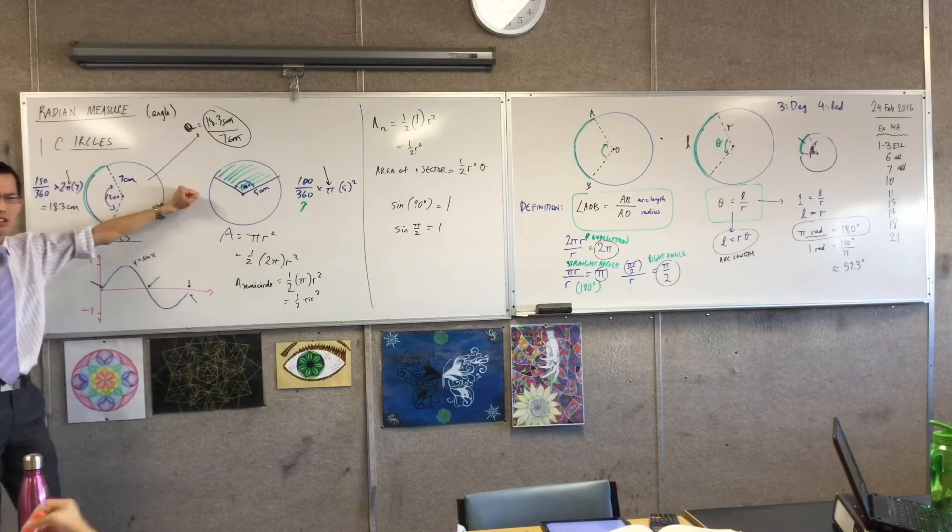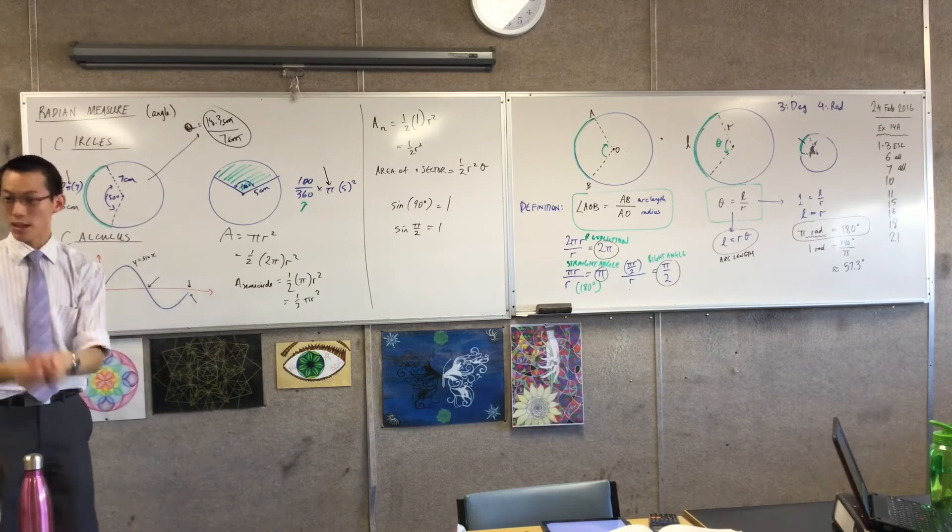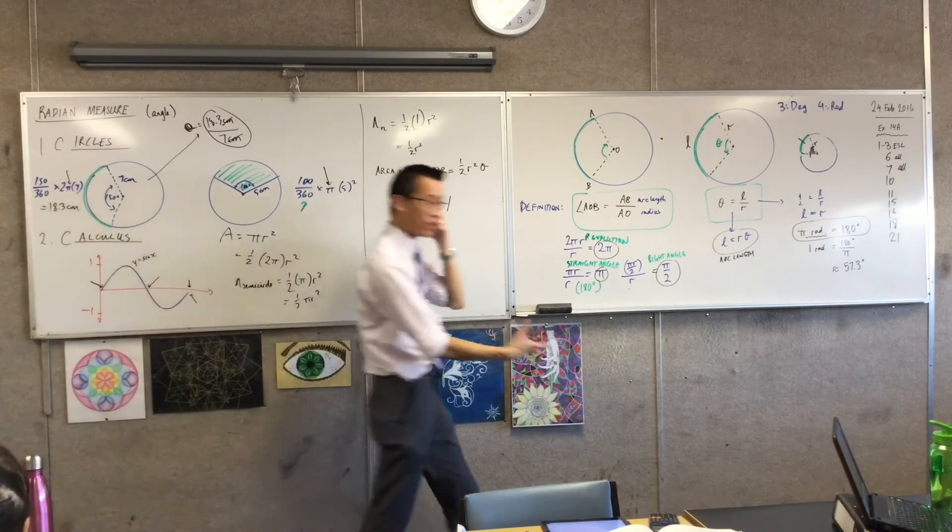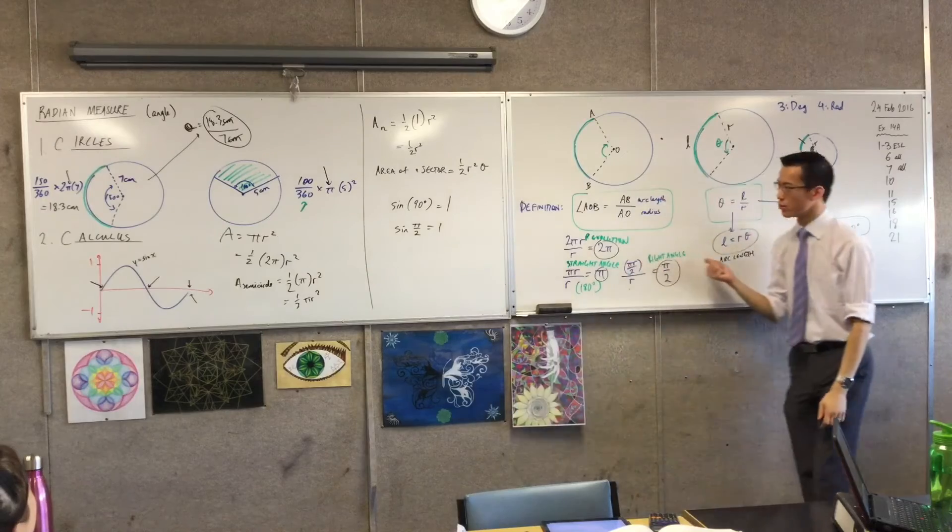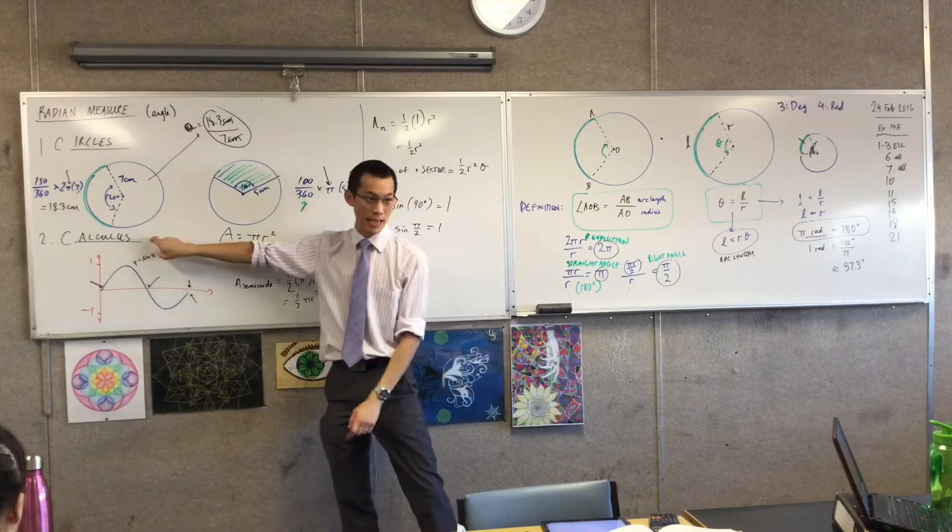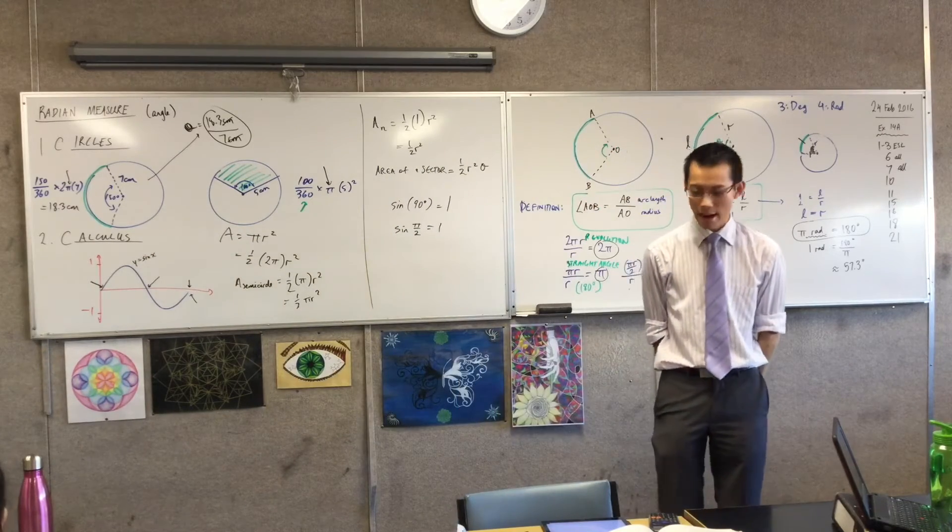So if you're in degrees, don't change it. Don't change the question into radians so that your calculator can deal with it. Just deal with the question in degrees and change your calculator. By the same token, when you are in circles, and when you're dealing with most trig functions, and certainly when you are dealing with calculus, you will find everything supplied to you in radians.